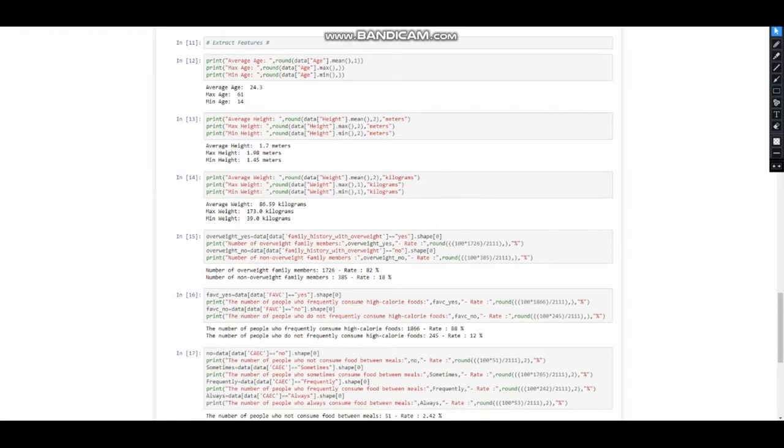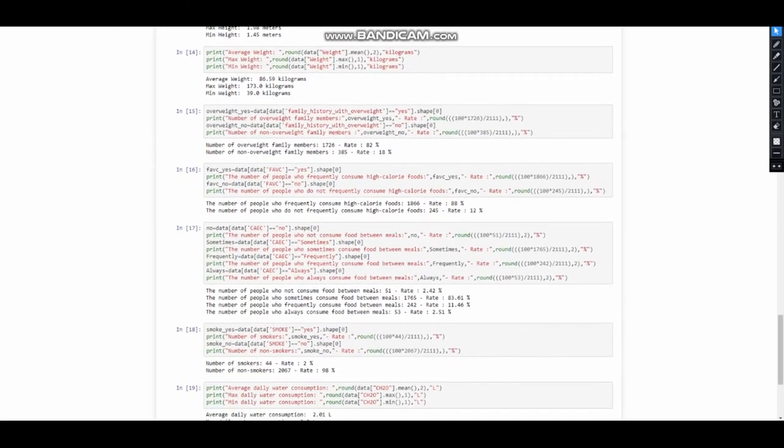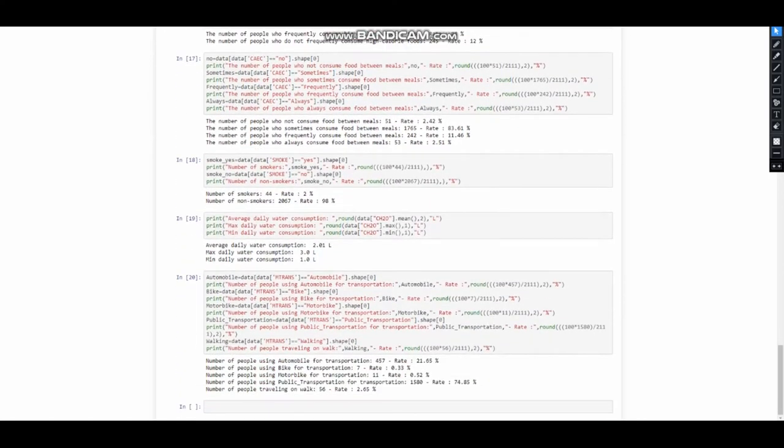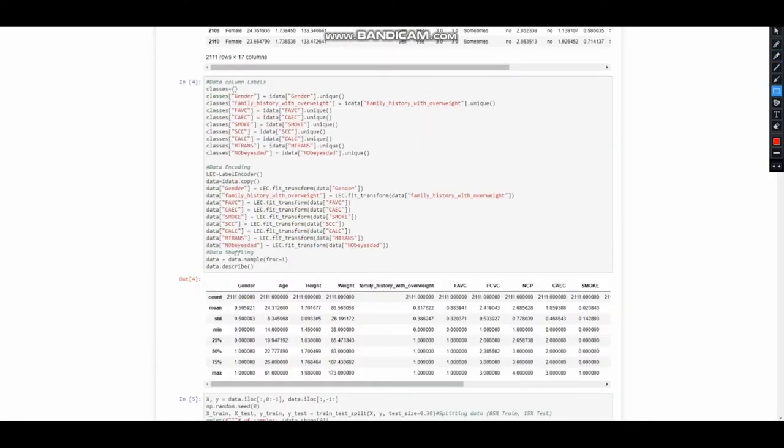This section contains some useful information about extract features that we have derived ourselves. In the code here, we convert the data in the dataset into numerical values to use in our model. The output obtained is here. All data converts to numerical values.